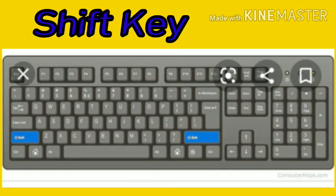Now students, we will study about the shift key. There are two shift keys present on the keyboard. As you can see, the keys marked with blue color are the shift keys. Now what is the function of the shift key? The shift key is used to type a capital letter. Press and hold down the shift key, and when you type a letter, it appears in capitals.